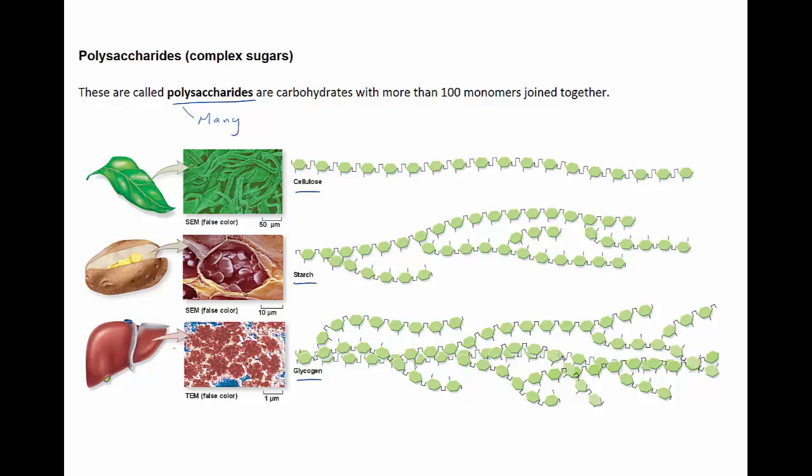Starch and glycogen have similar structures and functions. Both act as storage molecules that readily break down into their glucose monomers when cells need a burst of energy. Most plants store starch. Potatoes, rice and wheat are all starchy, high energy foods in the human diet.